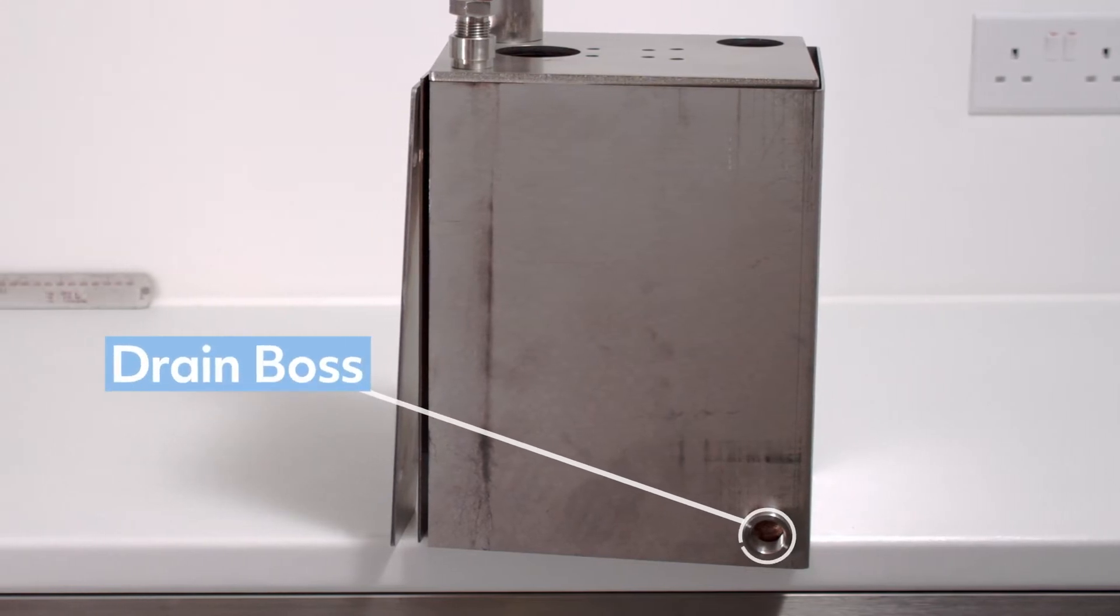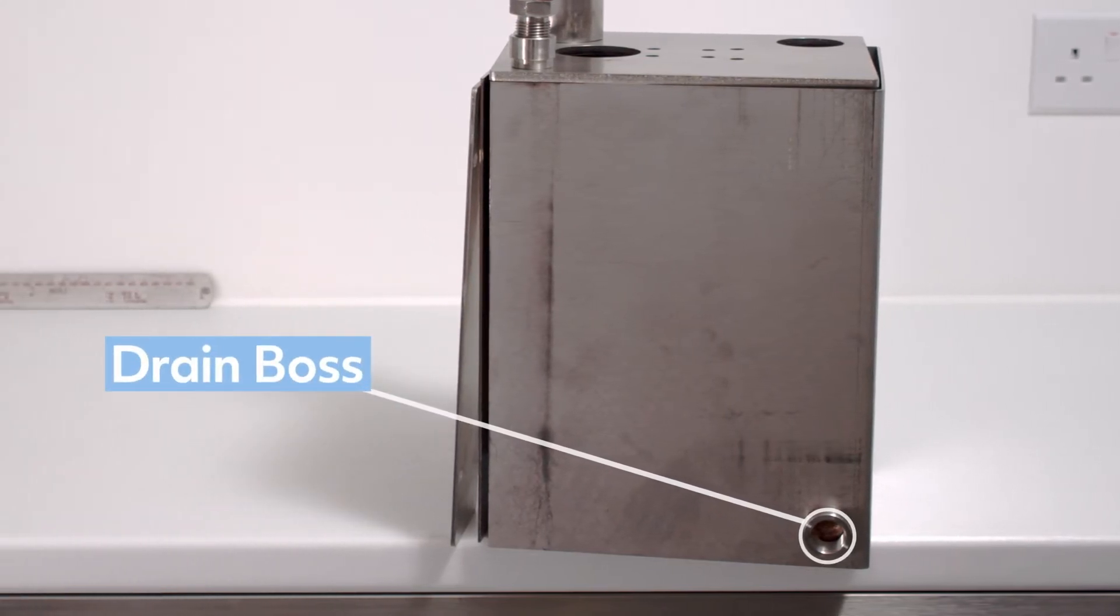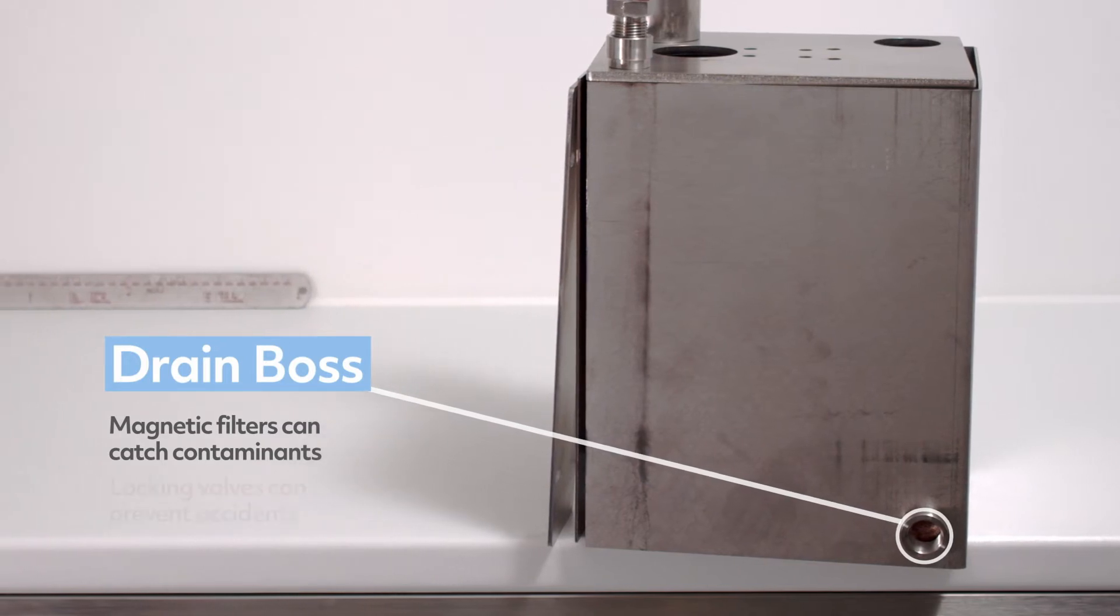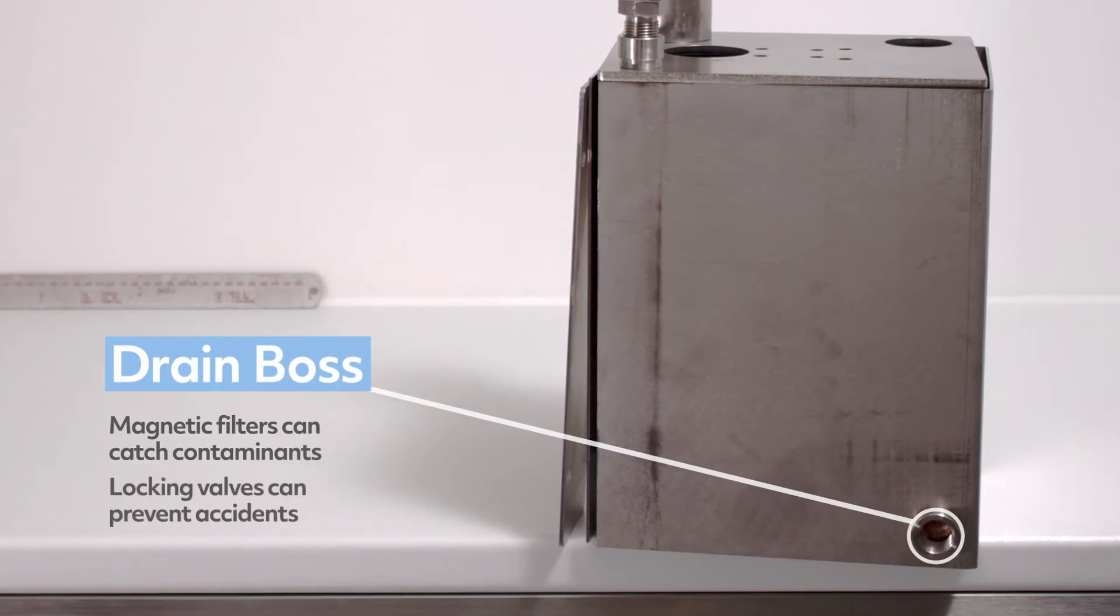Add a drain boss at the bottom of the reservoir with a plug or a drain valve. You could also use a magnetic plug to attract steel contamination. If it needs to be secure, use a locking valve.